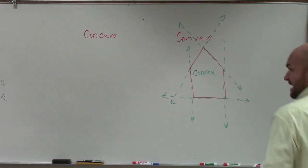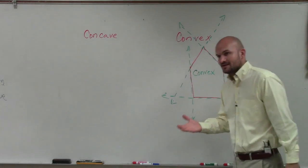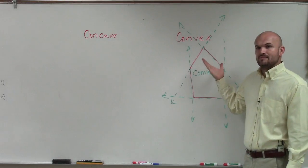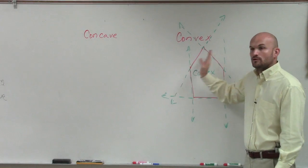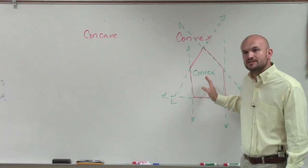I showed you an example of convex. The reason this is convex is because the lines that make up the sides, Nick, don't intersect the interior of the polygon.